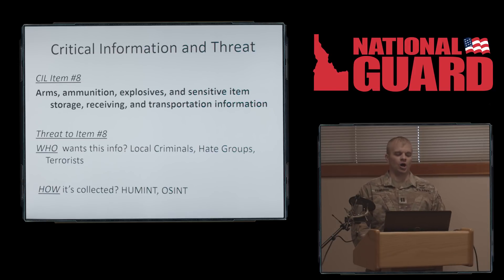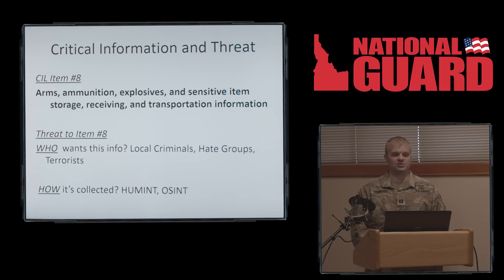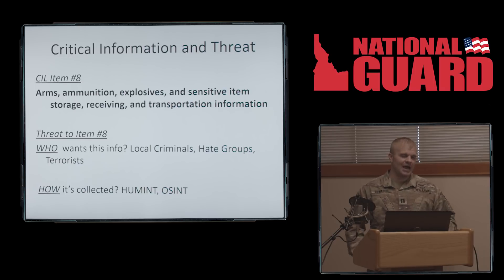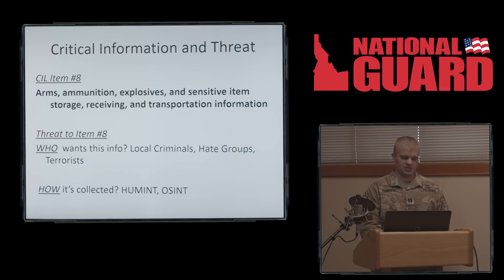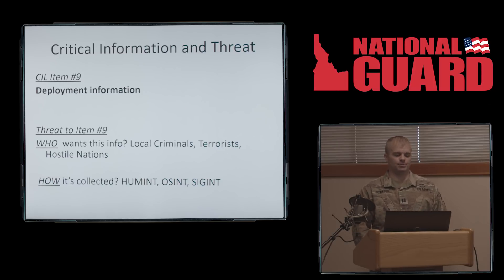Item number eight is arms, ammunition, explosives, sensitive items, storage, receiving, and transportation information. Local criminals would love to get their hands on this material. Hate groups and terrorists are also obvious threats who would want to use it against us. Collection method is HUMINT. Item number nine is deployment information. Local criminals, terrorists, and hostile nations want this information. It's collected by HUMINT, OSINT — that's a big one — and SIGINT.